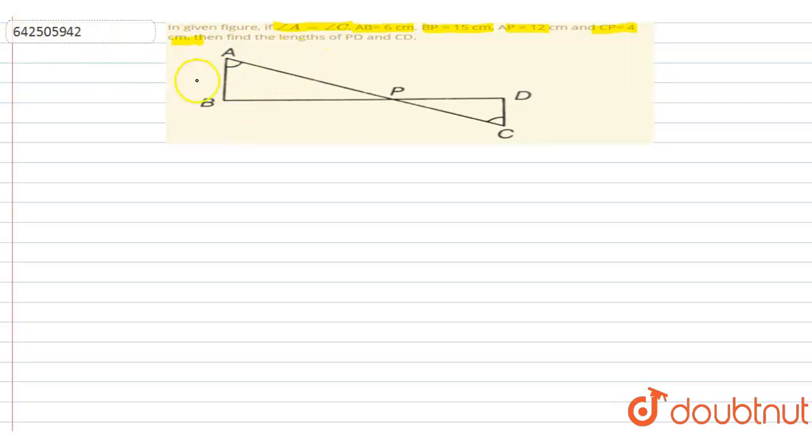So here, what is given? AB is 6 cm here, then BP is 15 cm, AP is 12 cm, and then CP is 4 cm.